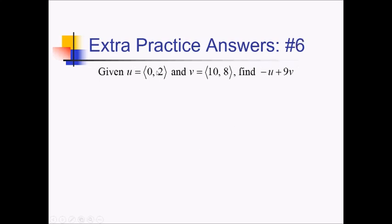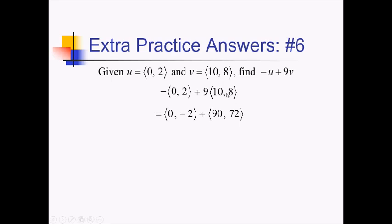On this problem I've got a few vectors in component form and I want to figure out negative u plus 9v. Let me start by replacing u and v with the actual component forms — negative 1 times 0 comma 2, plus 9 times 10 comma 8. Distributing the negative 1 and the 9: the first vector becomes 0 comma negative 2, and the next one is 90 comma 72. Now adding the x's and y's separately: 0 plus 90 comma negative 2 plus 72, which simplifies to 90 comma 70.